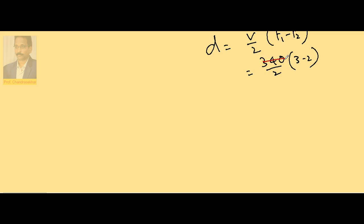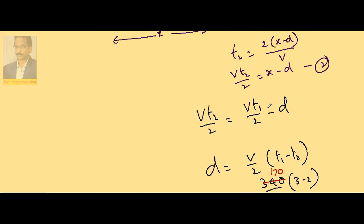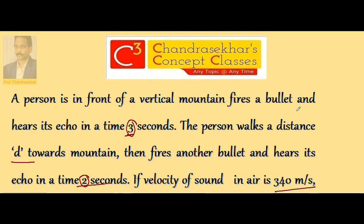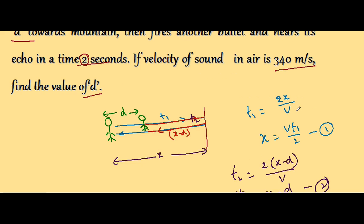Therefore d is 170 meters. So the person moves 170 meters towards the wall and then fires the bullet. Because of this, he is able to hear the echo in the second case in a time of 2 seconds.